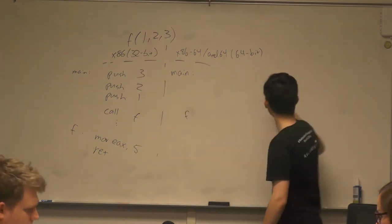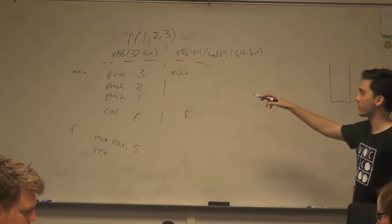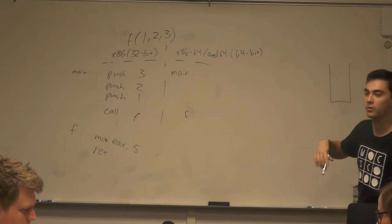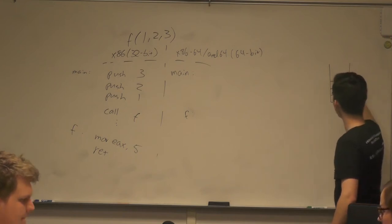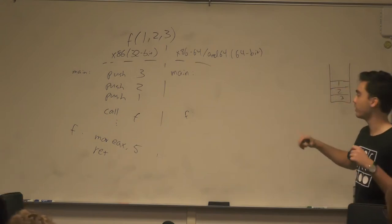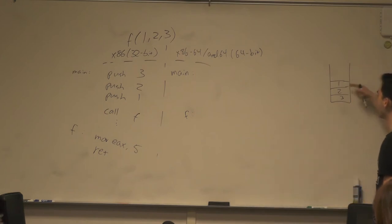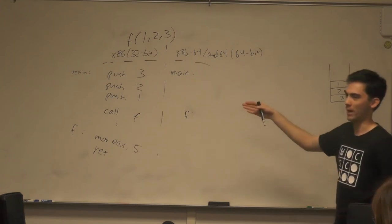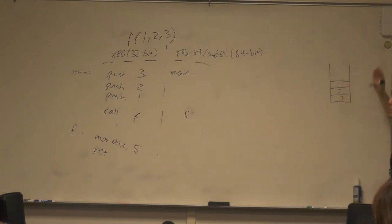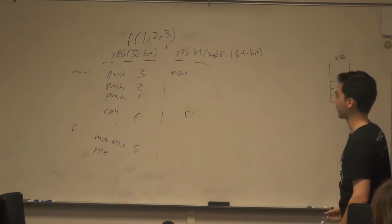On x86 the stack looks like 3, 2, 1 before the call. That way, theoretically, f could pop them into registers in order. That's part of the reason why we push them backwards — so that when you pop them off, they come off in order. That's how x86 does it.